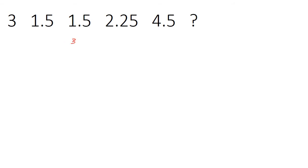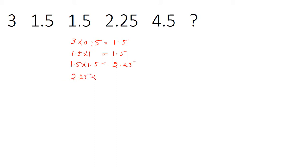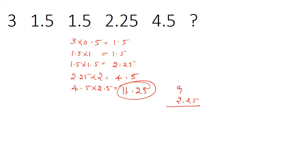So, 3 into 0.5 is 1.5 — that 0.5 is nothing but half. Then 1.5 into 1 is 1.5. Then 1.5 into 1.5 is 2.25. The multipliers are 0.5, 1, 1.5, 2 — so the next would be 2.5. That gives 4.5 into 2.5 equals 11.25. So 11.25 must be our answer.